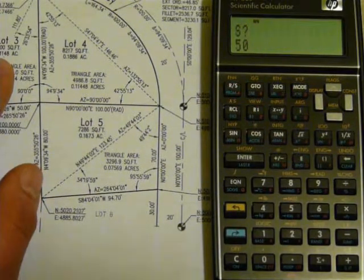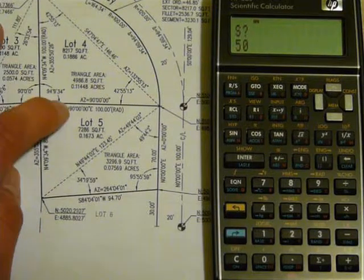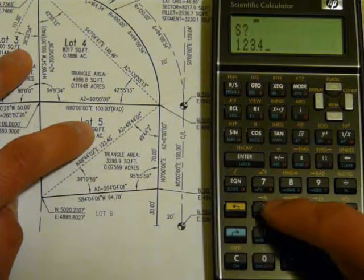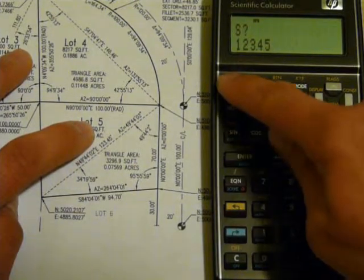And so we can enter the first side. We'll just pick one: 12345, RS.